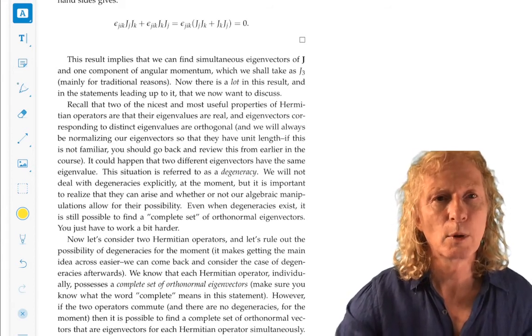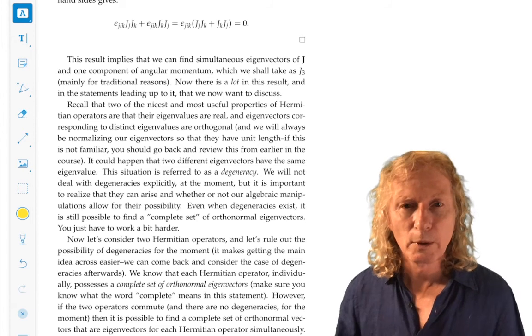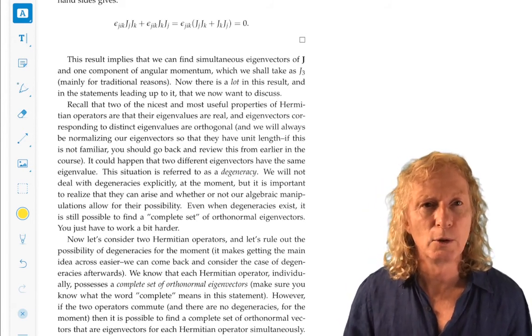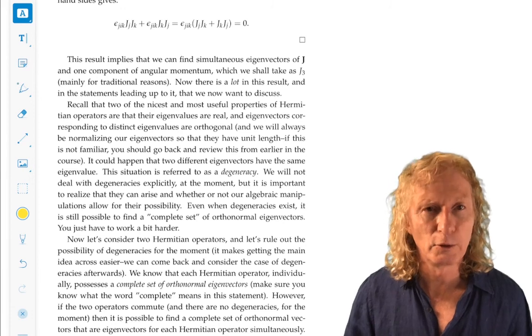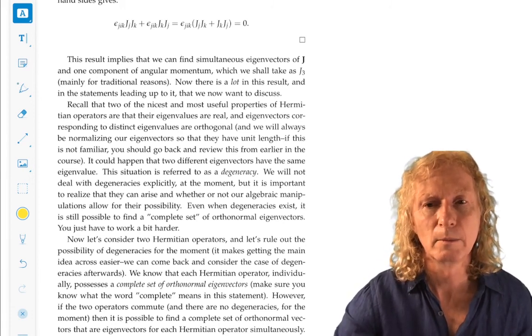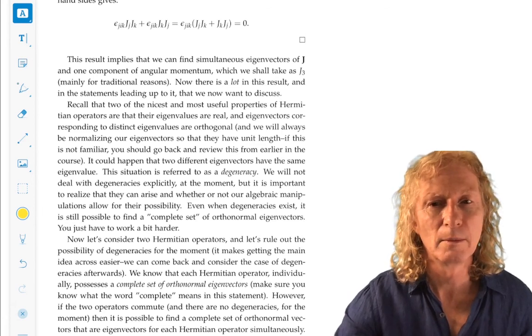And that is the next topic that we're going to go into. The eigenvalue problem for quantum theory of angular momentum, which boils down to the eigenvalue problem for J squared and J3. That's it for now. See you next time. Bye.